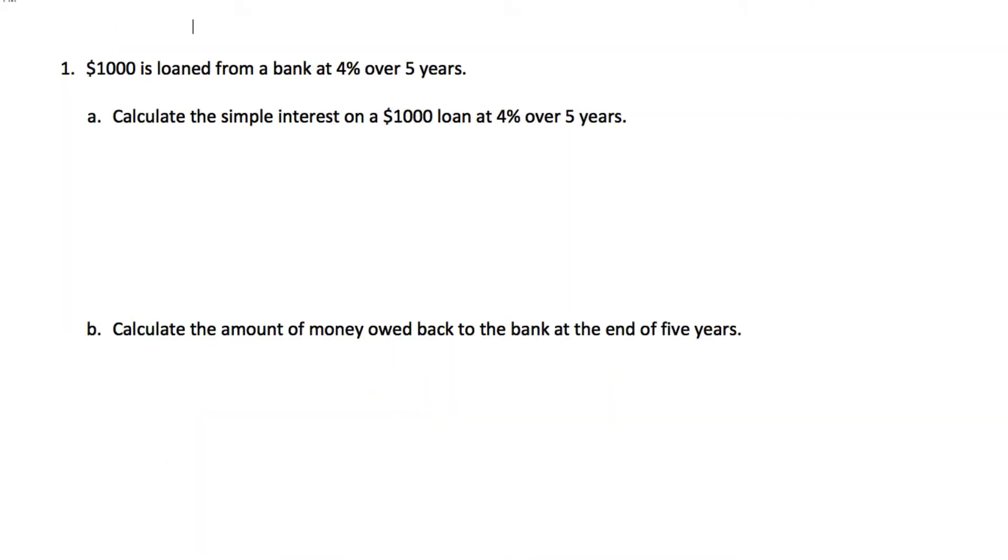Just some quick examples with this. If we have a thousand dollars that we're loaning from a bank at an interest rate of 4% over five years, let's calculate the amount of interest we would have to pay. So our interest we know is I equals P times r times t. And we know in this question that our principal initial amount is a thousand. Our interest rate r is 4%, which we will have to express as a decimal to use in our calculation. And our time is five.